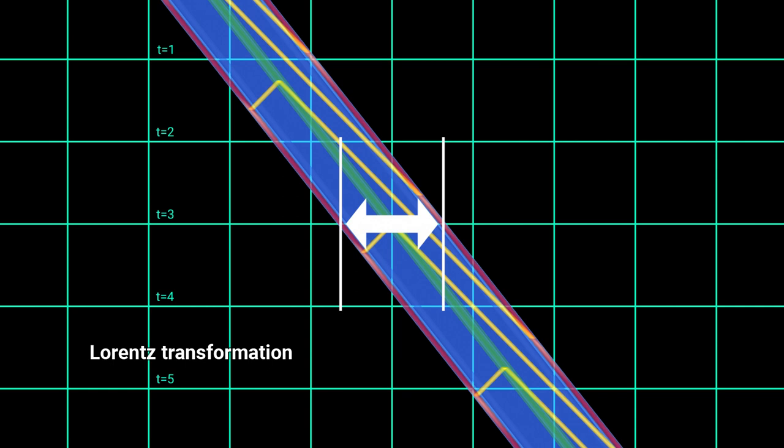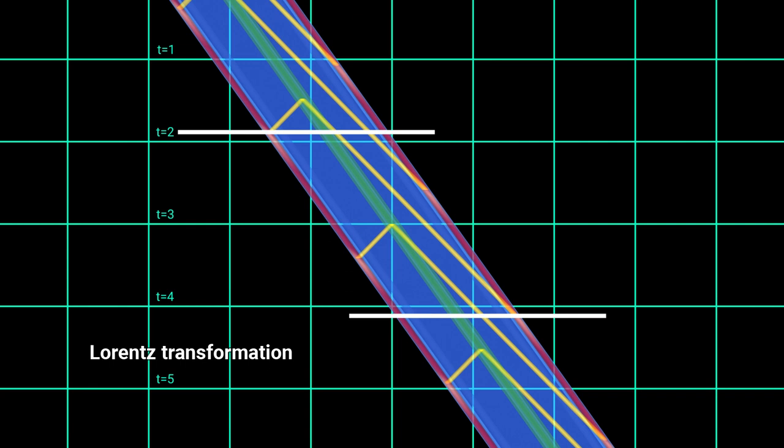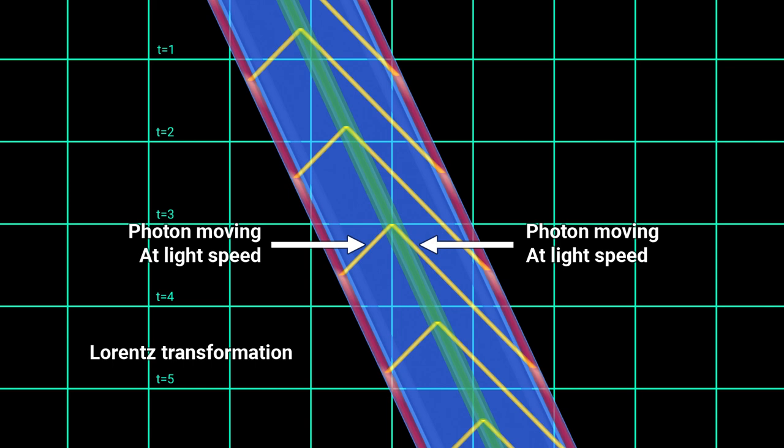It has some strange properties. It shrinks moving objects. It slows down moving clocks. It breaks simultaneity. But it gives us what we wanted. It preserves the speed of light. And in fact, it's the only reasonable transformation that has this property, so it must be the correct one.